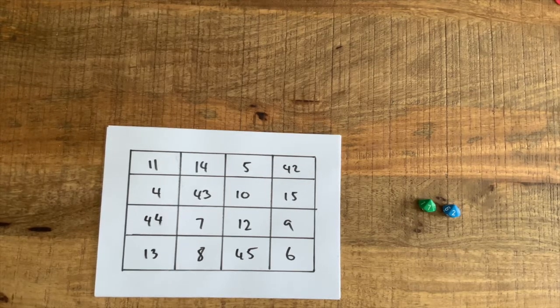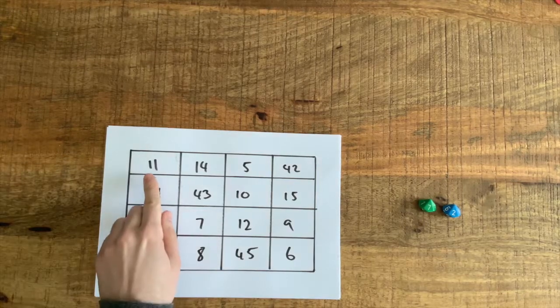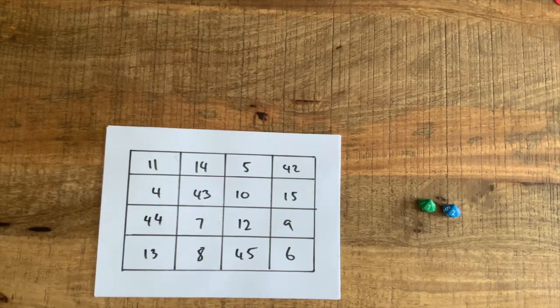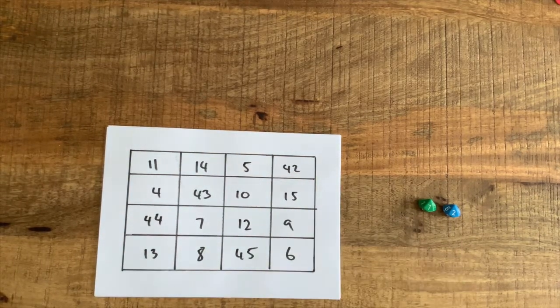Now you might think that that's just a whole lot of numbers but just you watch. If I say 11 plus 14 well that's 25 plus 5 is equal to 30 plus 42 is equal to 72.